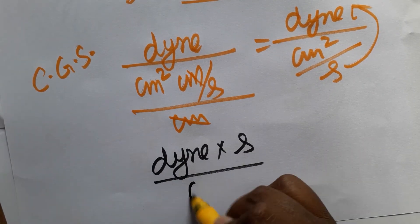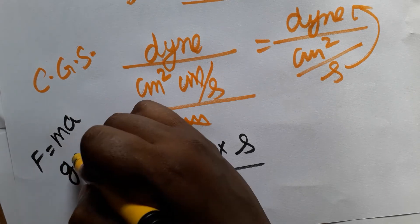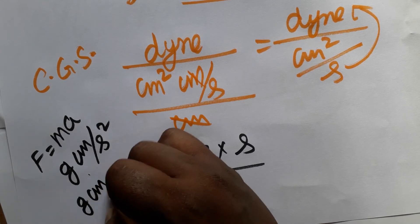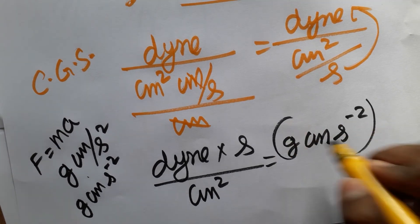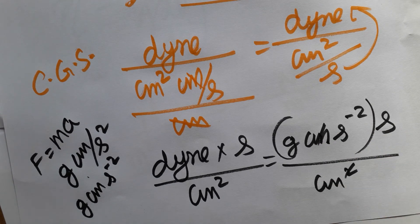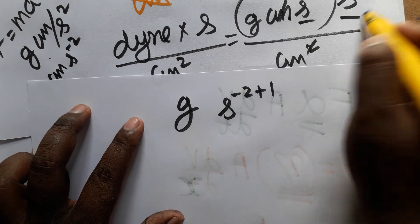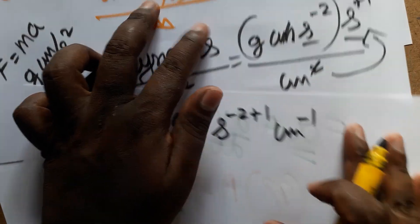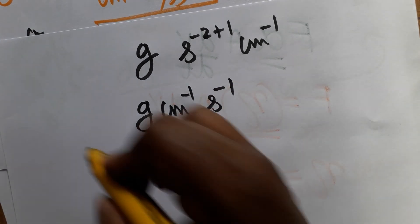Dyne is the force unit in the CGS system: dyne equals gram times centimeter per second squared, i.e., g·cm·s⁻². Substituting: g·cm·s⁻² times second divided by centimeter squared. One centimeter cancels, and combining seconds: s⁻²⁺¹ = s⁻¹. The final CGS unit of coefficient of viscosity is gram·cm⁻¹·s⁻¹, also known as Poise.